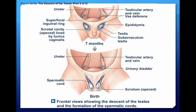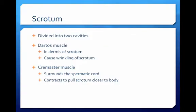Prior to seven months, the testes are located in the abdominal pelvic cavity. The scrotum is divided into two cavities, and a thickening in the scrotal surface marks the partition between the two scrotal chambers. The dartos muscle is a smooth muscle in the dermis of the scrotum that causes the characteristic wrinkling of the scrotal surface. The cremaster muscle is a layer of skeletal muscle deep to the dermis that will contract to pull the testes closer to the body or relax to move the testes away from the body. Sperm production in the testes requires temperatures slightly lower than body temperature, so the cremaster muscle will relax to move the testes away from the body to cooler temperatures or contract to move them towards the body for warmer temperatures.